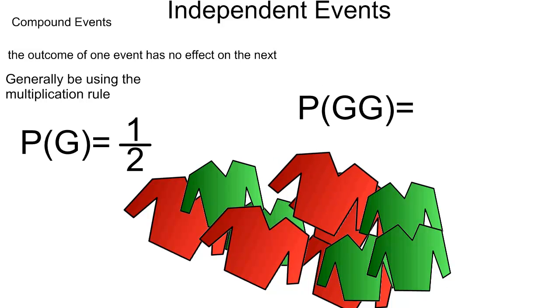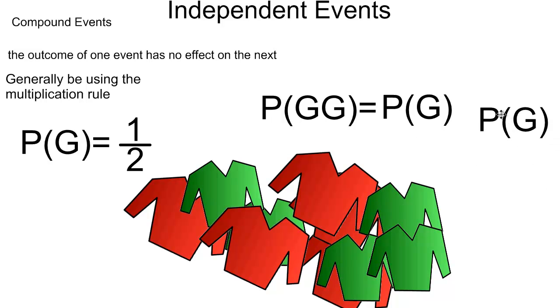Now if I want to know what the probability of pulling out a green cardigan followed by a green cardigan is, I use the multiplication rule. That's just the probability of pulling out a green cardigan times the probability of pulling out a green cardigan, which is one half times one half, which is just one quarter.